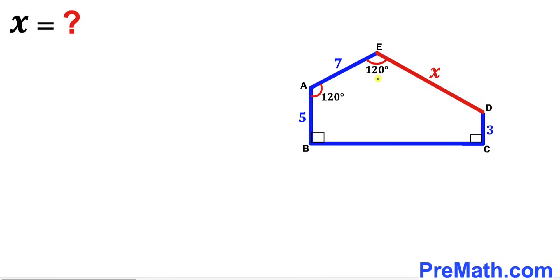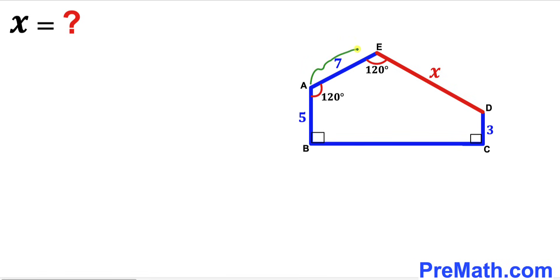Welcome to pre-math. In this video we have got this five-sided irregular polygon ABCDE, also called an irregular pentagon. Segment AB is 5 units, segment AE is 7 units, and segment CD is 3 units.